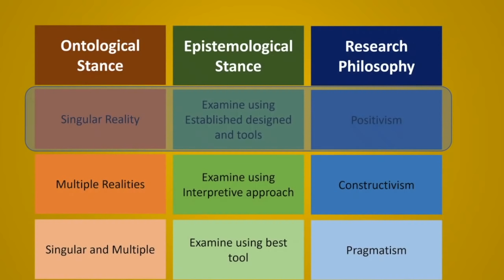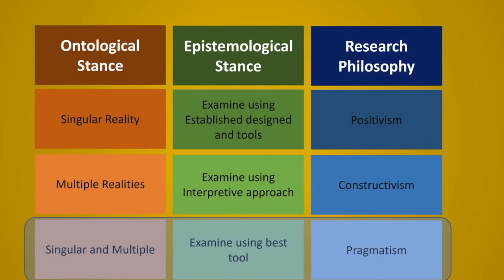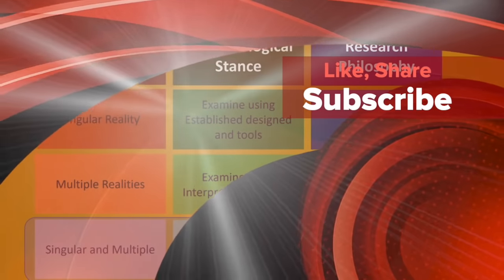To summarize: positivism is based on the ontological stance of singularity — there is only one truth — and knowledge can be measured using tools. Constructivism holds that there are multiple realities and knowledge needs to be interpreted. Pragmatism holds that reality can be singular or multiple and we can use any available tool to measure or interpret it. Please mention in the comments what approach you are using in your research project, thesis, or article. I hope this video is useful for understanding research philosophies.